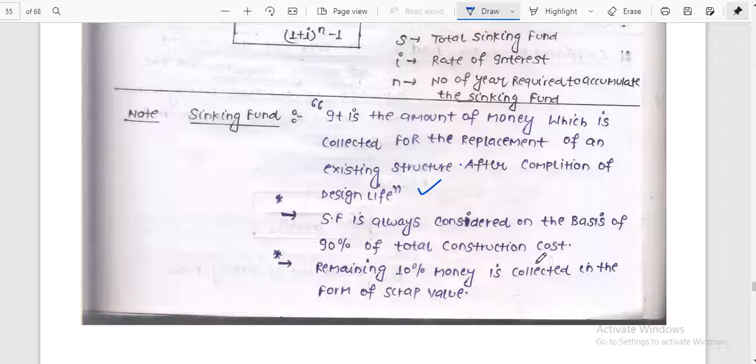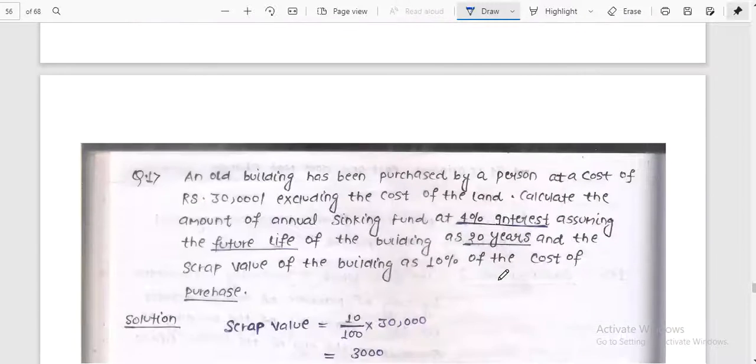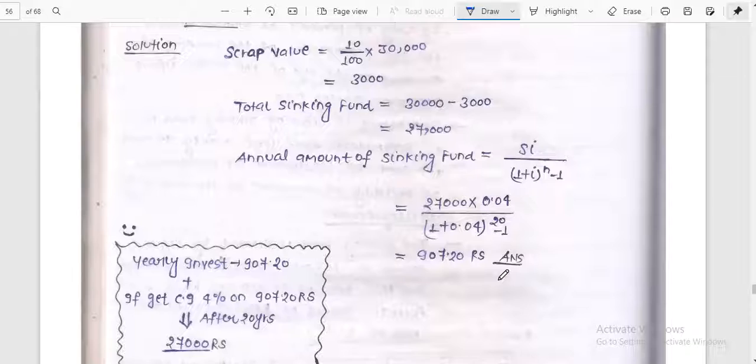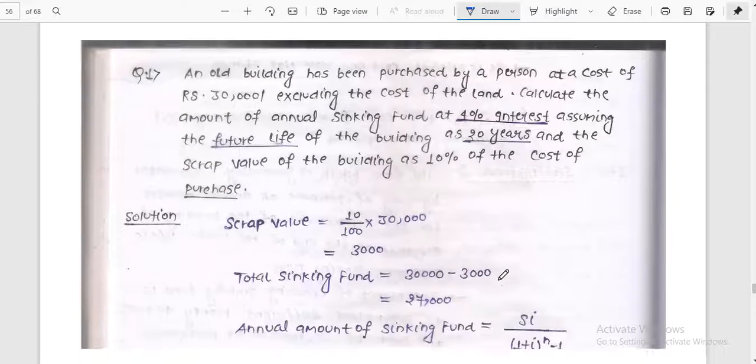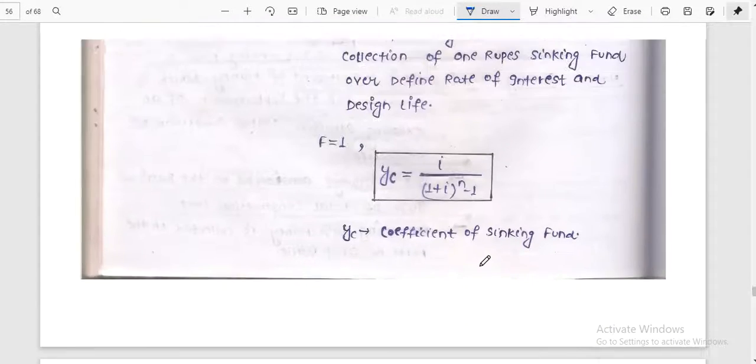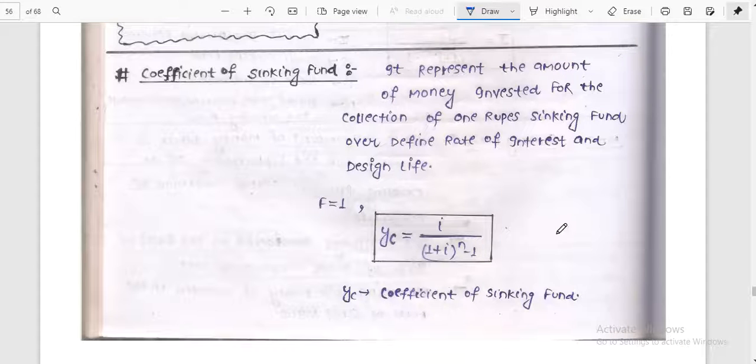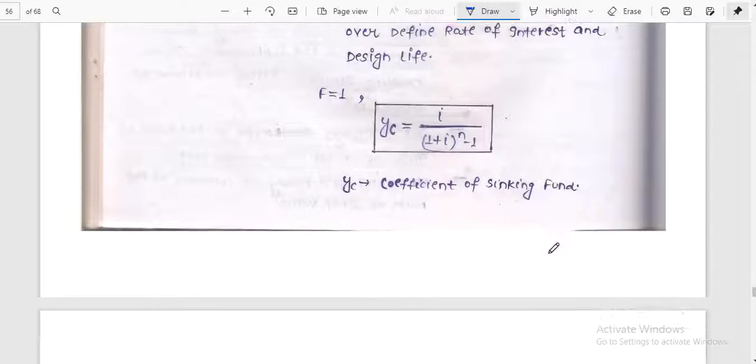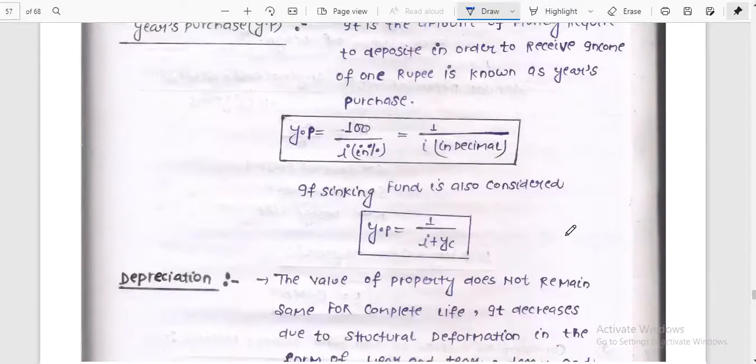The formula is I equals S times i divided by 1 plus i to the power n minus 1. The coefficient of sinking fund is i divided by 1 plus i to the power n minus 1. It represents the amount of money invested for the collection of 1 rupee sinking fund over the design rate of interest.